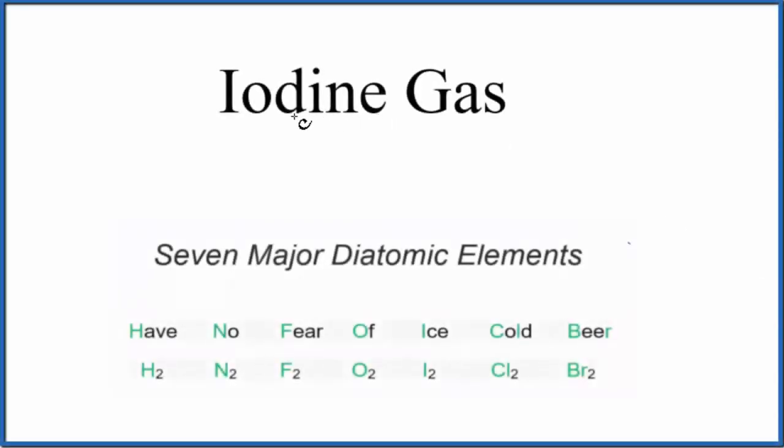In this video, we'll write the formula for iodine gas. Simply put, when you see iodine gas in a word equation, it's going to be I2.